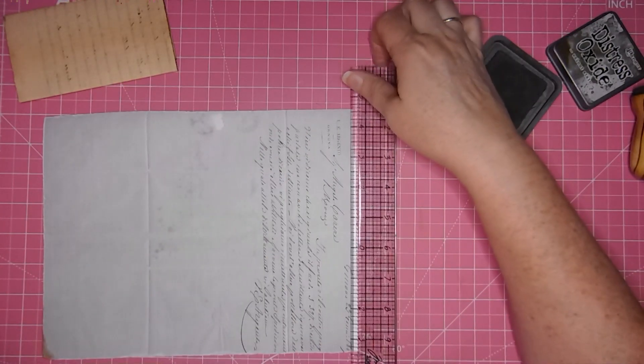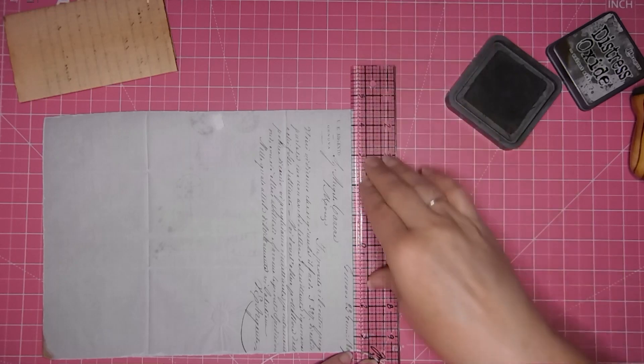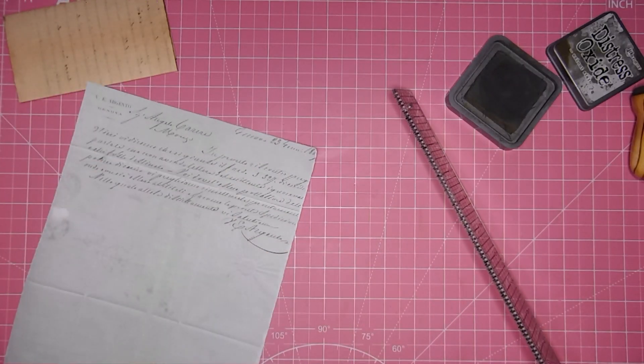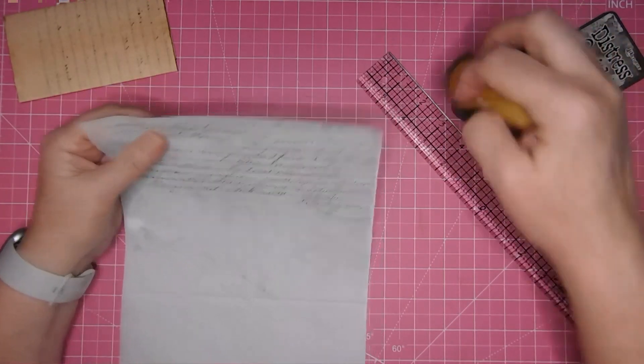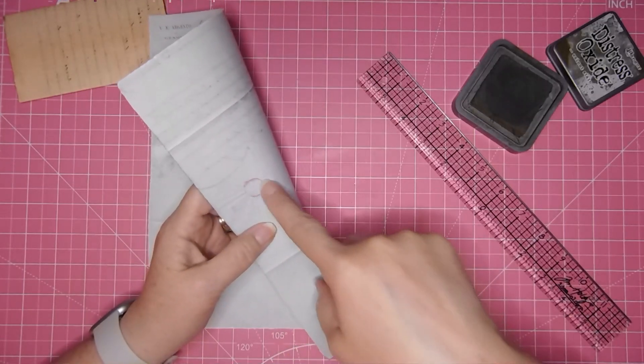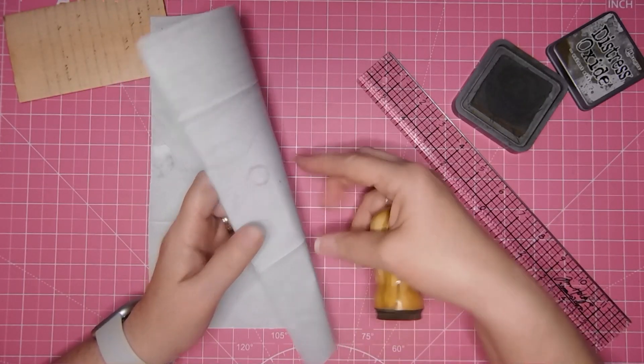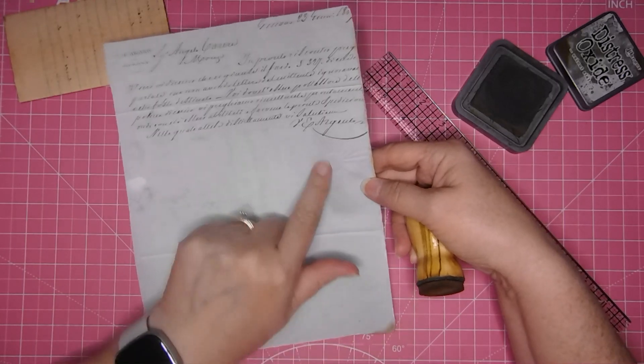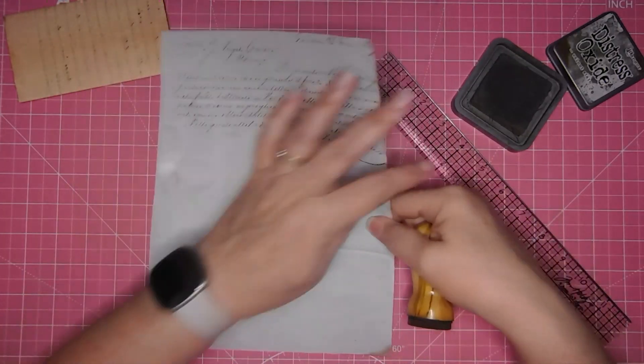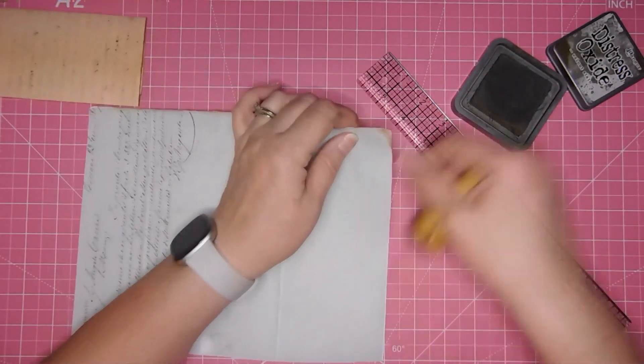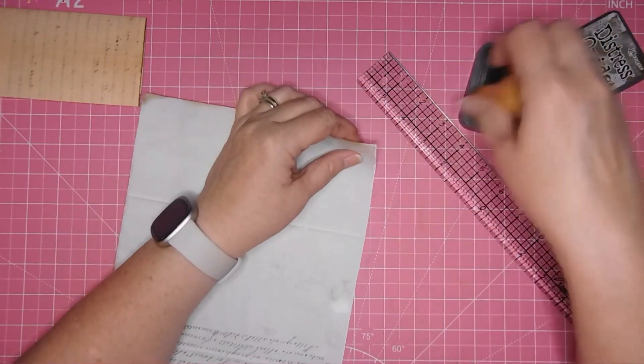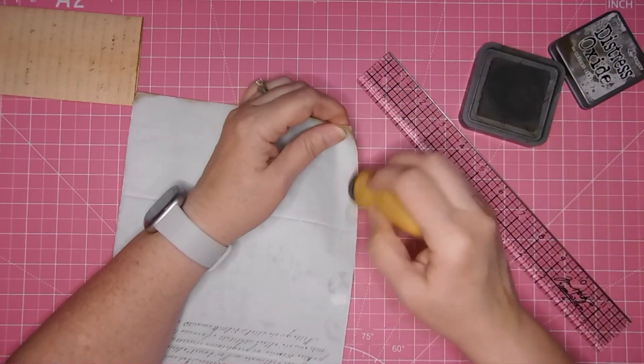These this one has the creases as well that look like they line up so I'm excited about that. Oh I didn't do this edge. Let's just ink this up and I love that this little spot here with this is probably a wax seal comes through on the other side of the paper. It's really cool. The postal marks are coming through.